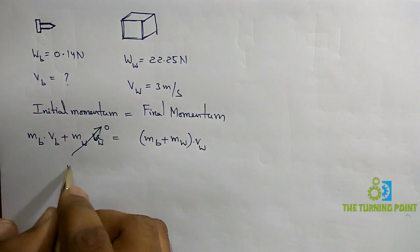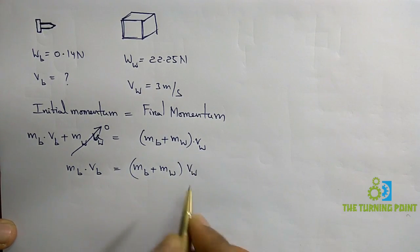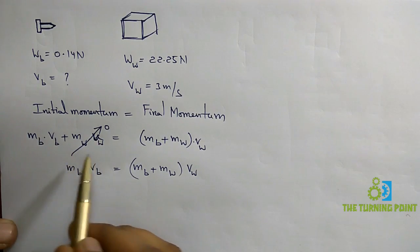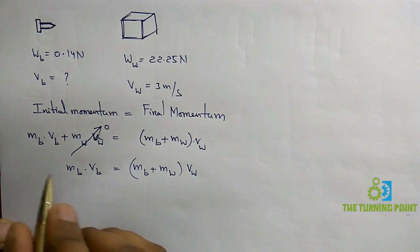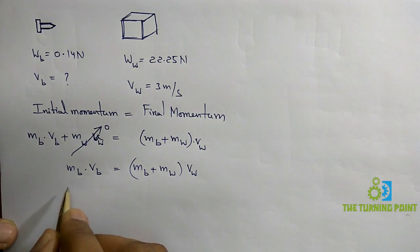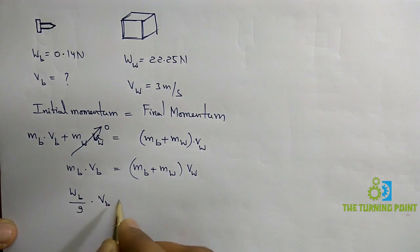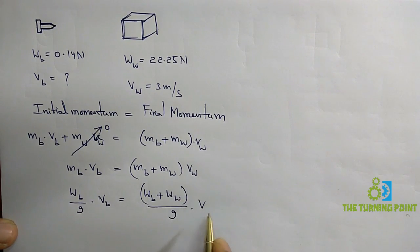So: M_B × V_B = (M_B + M_W) × V_W, where W denotes wooden block and B denotes bullet. Since weights are given instead of masses, we convert using W = MG, so M = W/G. Substituting: weight of bullet divided by G times velocity of bullet equals weight of bullet plus weight of wooden block divided by G times velocity of wooden block. The G cancels on both sides.